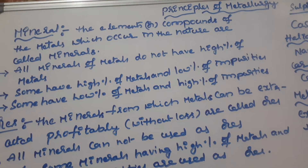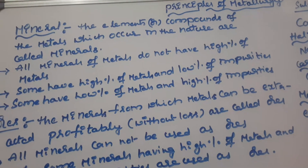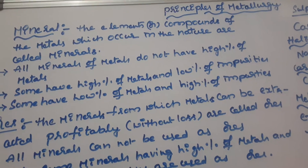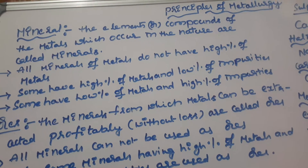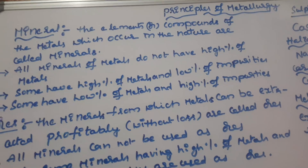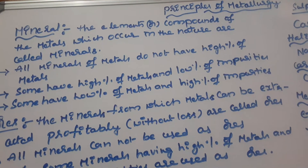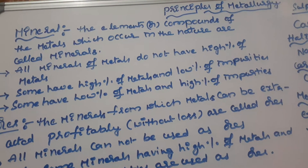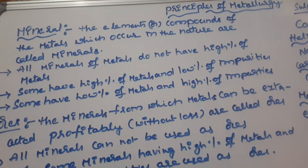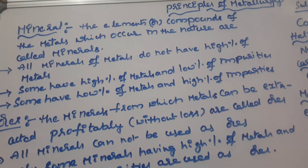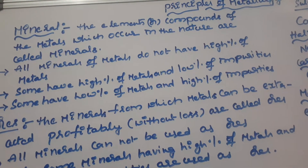In principles of metallurgy we study about the extraction of metals from their ores. Metals are highly electropositive, so in nature they are not available in the pure state or native state. They are available in the impure state. This impure state of metals is classified as minerals.